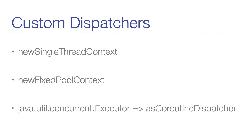As you can see, threading is highly configurable when using coroutines. However, at least when developing Android applications, you will most likely just use one of the three default coroutine dispatcher implementations: either the main dispatcher, the IO dispatcher, or the default dispatcher.